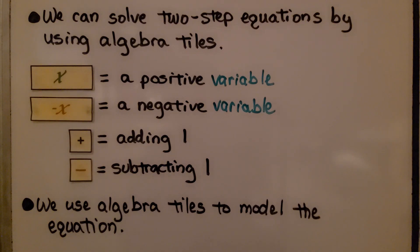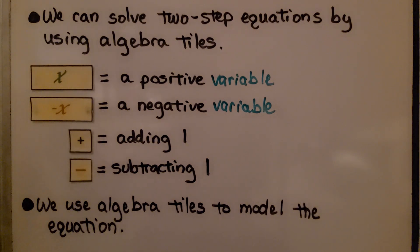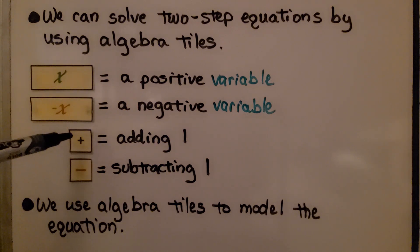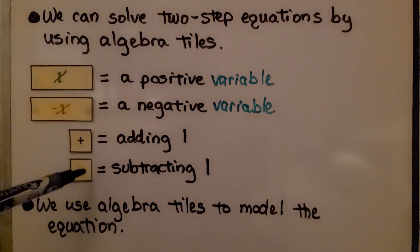We can solve two-step equations by using algebra tiles. We've used these before in some of the previous lessons. We have a rectangular x — that's a positive variable. We have a rectangular minus x — that's a negative variable. We have a little plus one square for adding one, and a minus square for subtracting one.